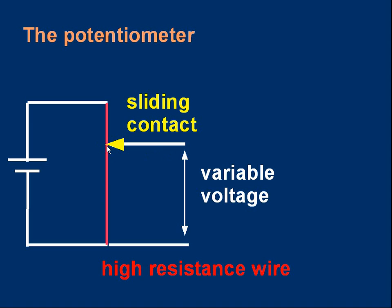Depending whereabouts we make contact near the top, the middle or the bottom, the voltage between the slider and the bottom wire can be adjusted. It's a variable voltage. As we slide the contact up or down the red high resistance wire.